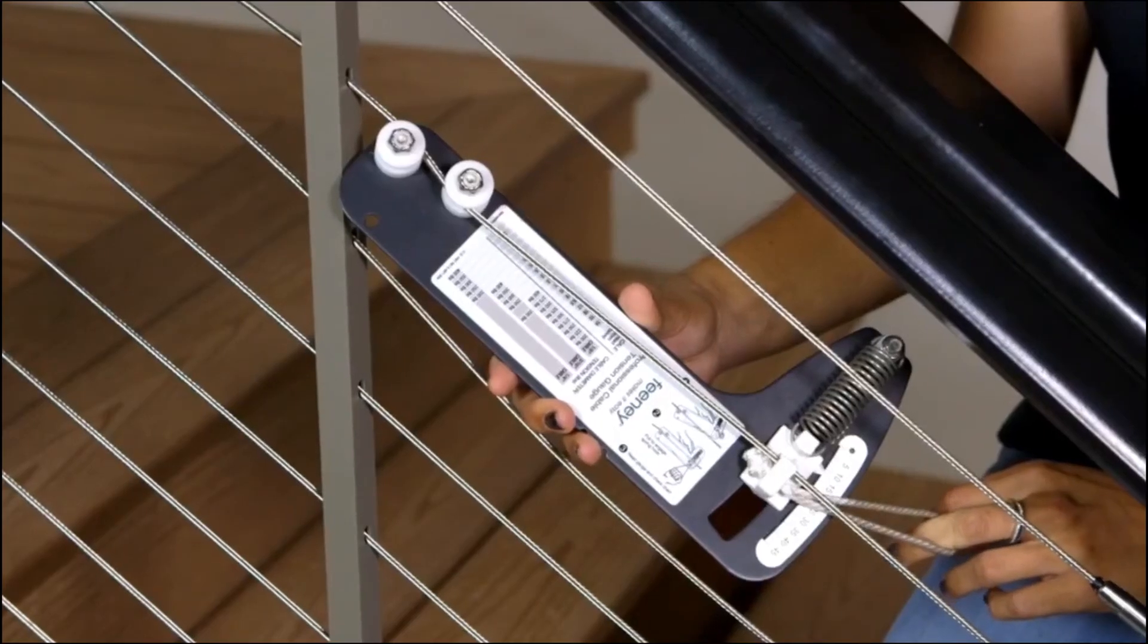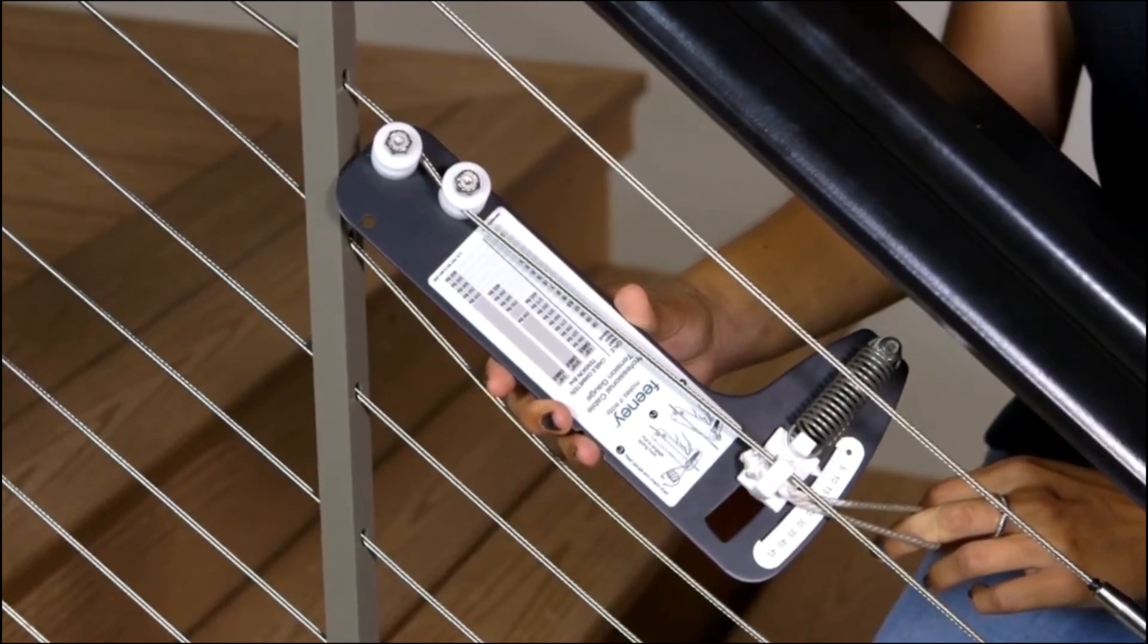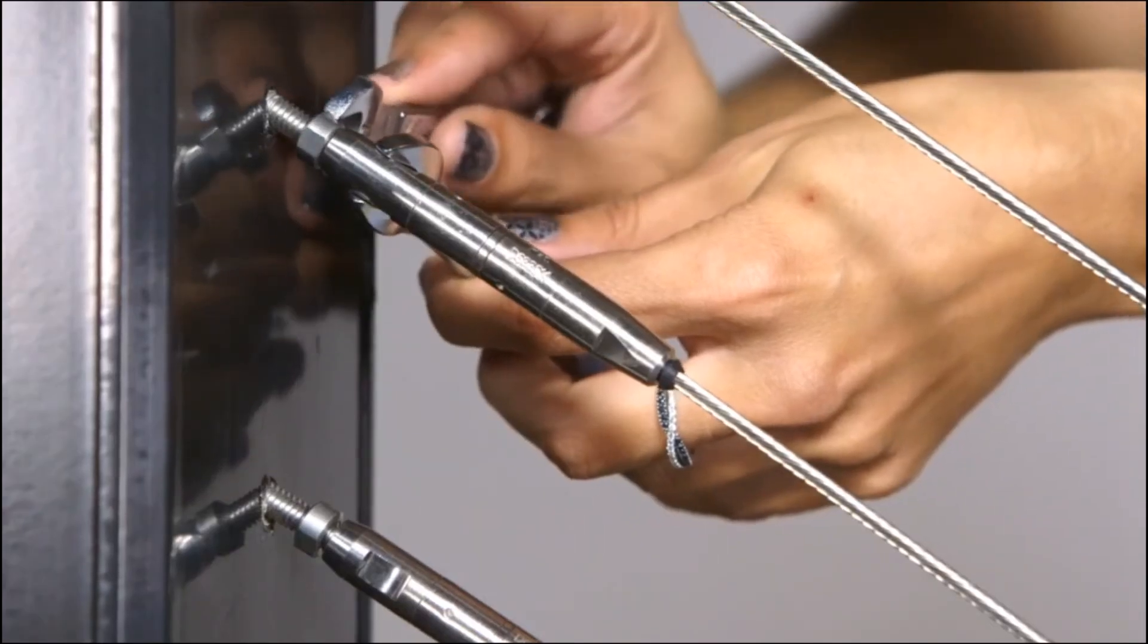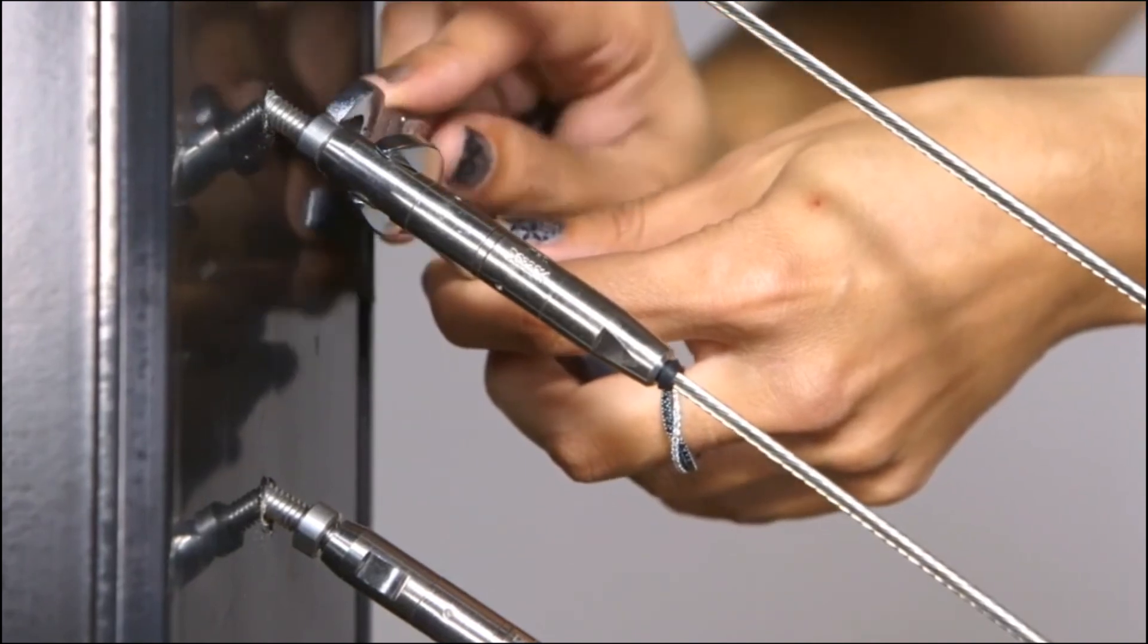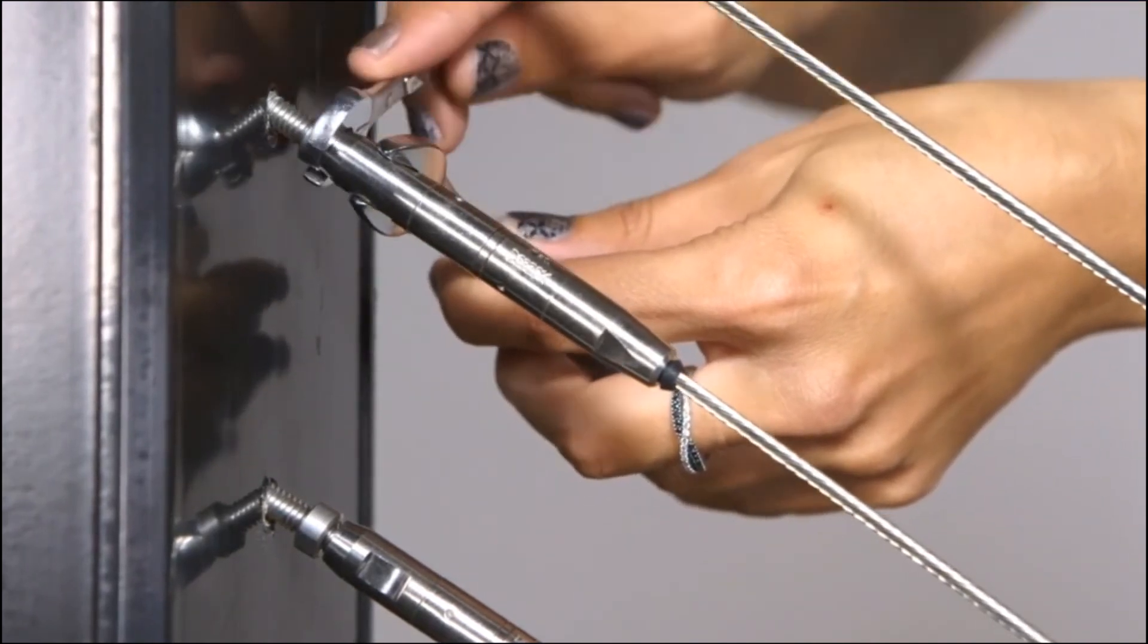You may use a Feeney tension gauge to determine when you have tightened the cables enough. Once the cable is tensioned, tighten the lock nuts against the Quick Connect lag swivel turnbuckle to prevent it from loosening.